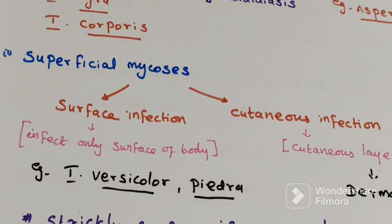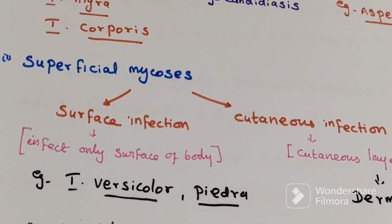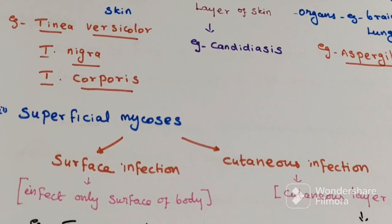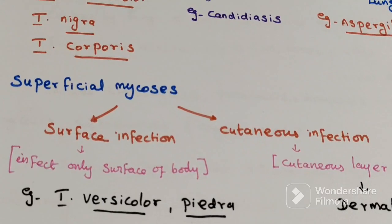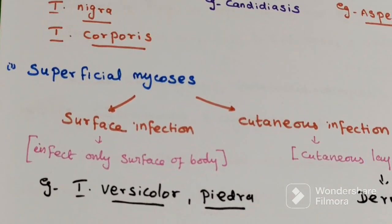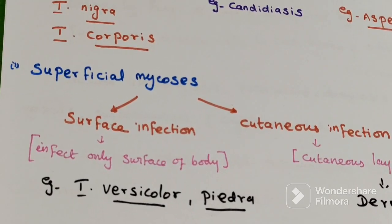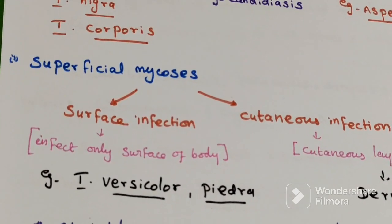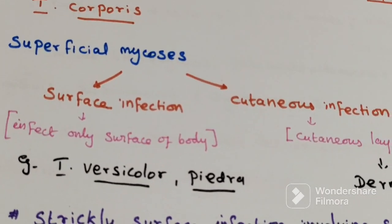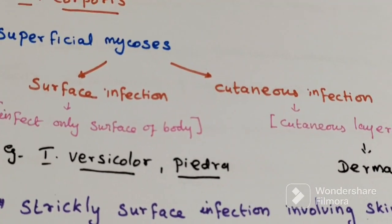First one is superficial mycosis. This is further classified into two categories: surface infection and cutaneous infection. Surface infection only infects the surface of the body. Examples include tinea versicolor, tinea nigra, and piedra.